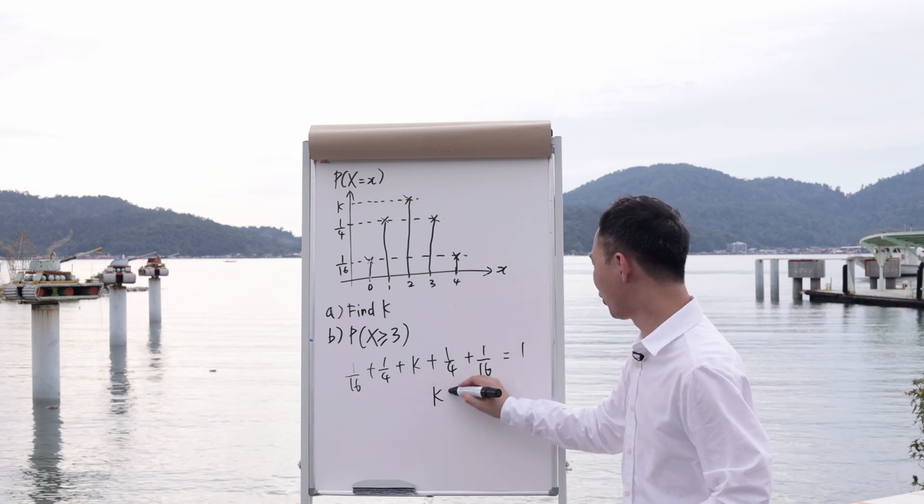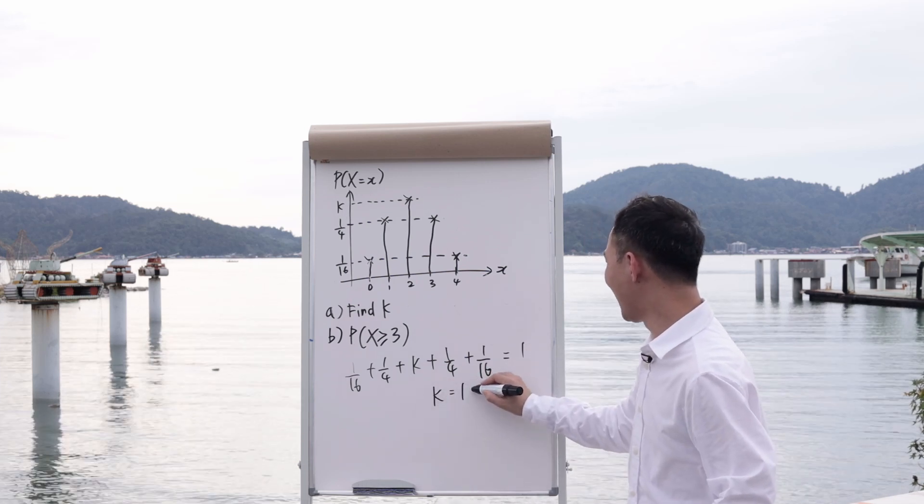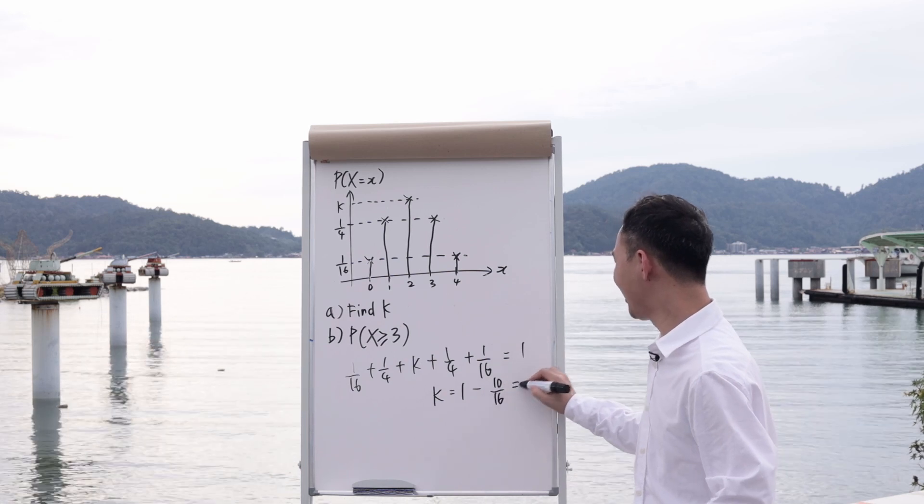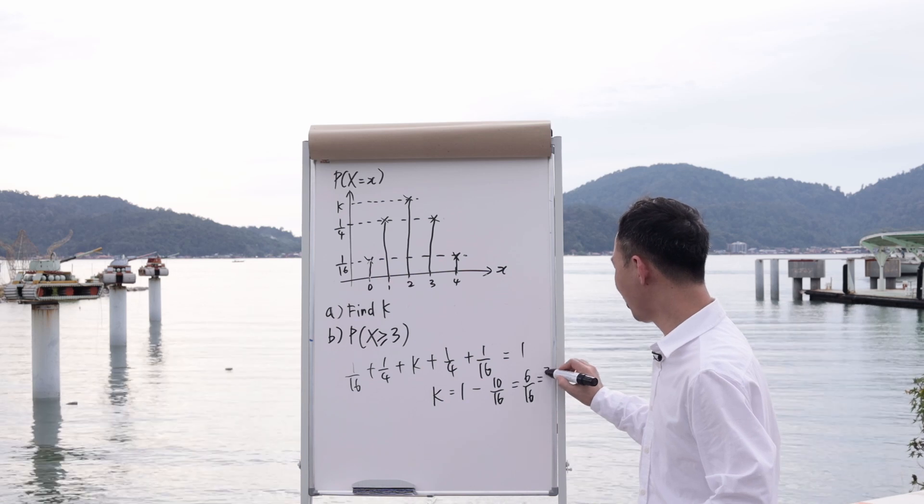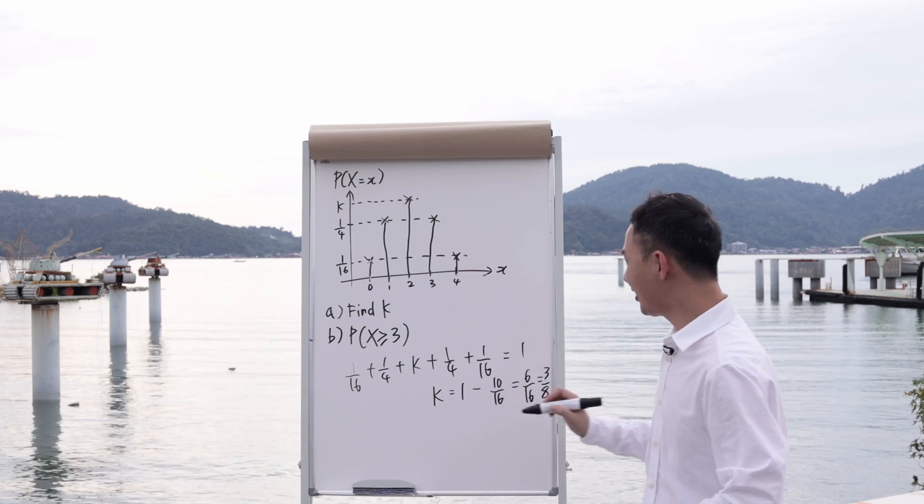So here will be k equals to 1 minus 10 over 16. And then you can easily get the answer, which is 6 over 16, or you simplify, it should be 3 over 8. All right, this is how I find k.